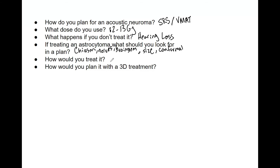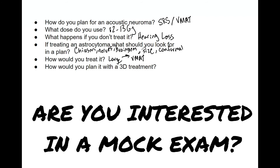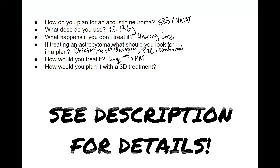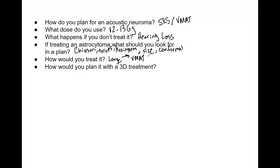How would you treat an astrocytoma? It depends on the size. If it's very large, you're going to go with VMAT, which allows you to spare OARs. When it's too big for SRS you can't do low-fractionation high-dose treatment, and you certainly can't use cones. The threshold for being 'big' is greater than 35 cc.